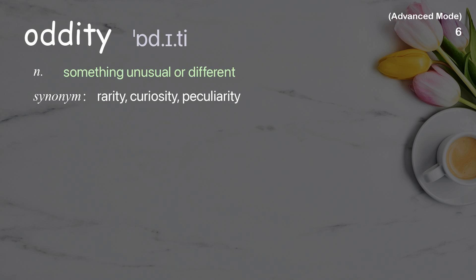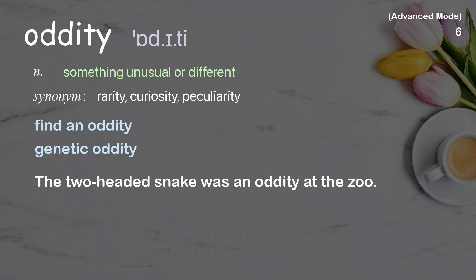Oddity: something unusual or different. Examples: find an oddity, genetic oddity. The two-headed snake was an oddity at the zoo.